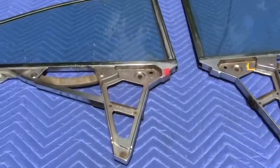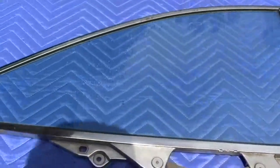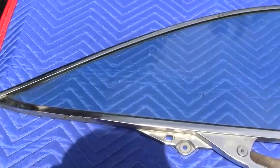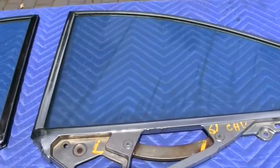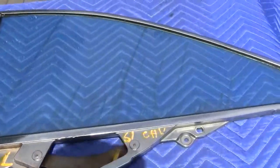Up for auction are an original set of intact, excellent condition rear windows for 1961 Chevy Impala bubble top. These are bubble top rear windows, left and right hand side.